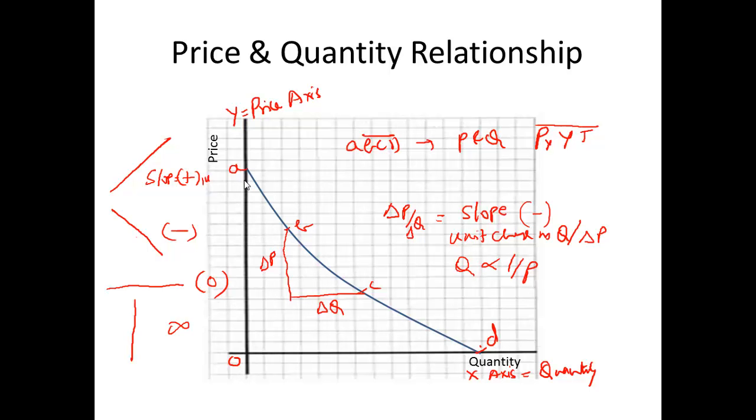Now two other points on this graph you should note: one is A, another is D. Point A is where the curve cuts across the y-axis, and at this point, this is the maximum price point. This product cannot be sold for any price beyond this because for any price beyond this, the demand is going to be zero, Q is going to be zero.